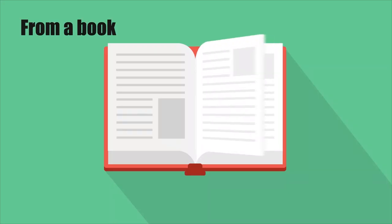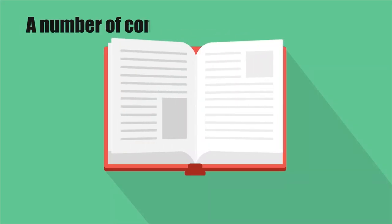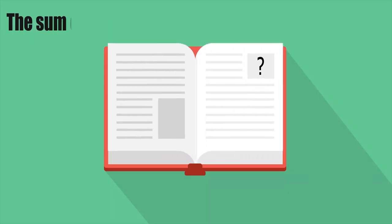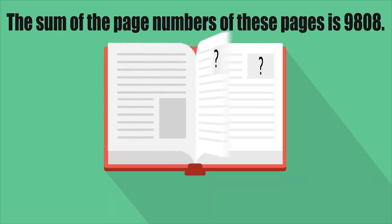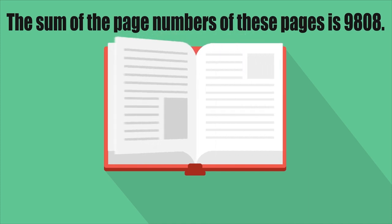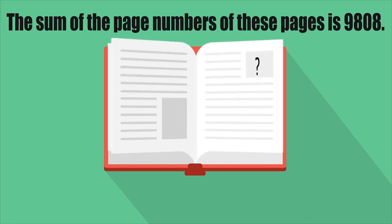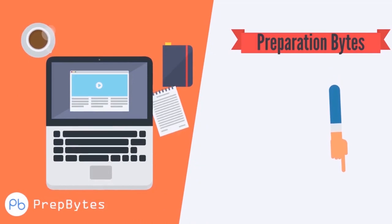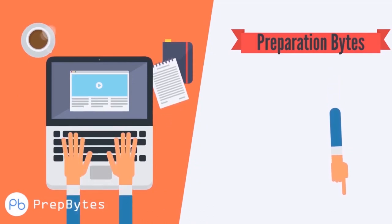From a book, a number of consecutive pages are missing. The sum of the page numbers of these missing pages is 9808. Which pages are missing?